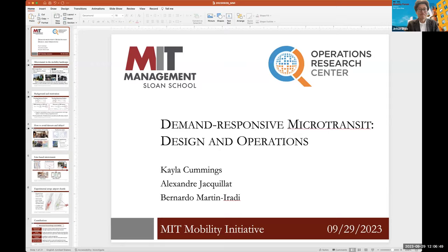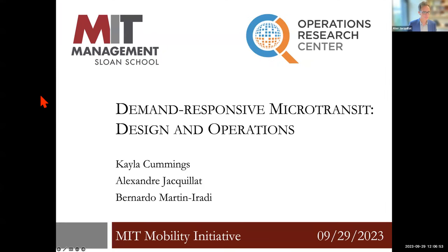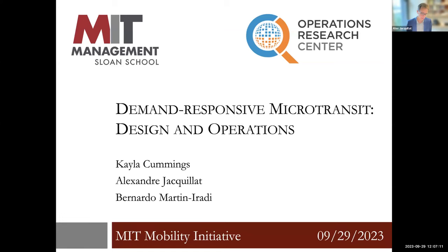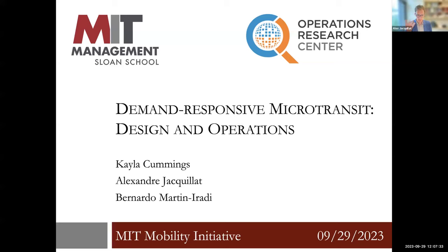Thank you so much, Jinghua, for the introduction. This topic is really about starting a discussion about demand-responsive microtransit—what it can look like, what it should look like, and from a research standpoint, how to optimize it. There are two questions: one is an operational, real-time question, and the other is a more strategic planning question around the design of these networks. I'll present two-stage stochastic optimization models and algorithms, spending a bit more time on results to see how microtransit can contribute to the mobility ecosystem between transit and ride-sharing.